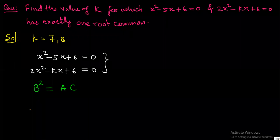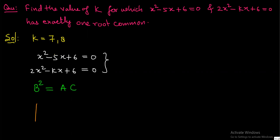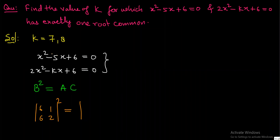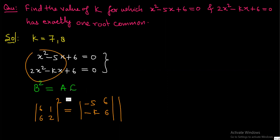So what will b be? The sub-determination will involve minus 5, minus k, 6, 6. And the coefficients will be equal to 1, 2, minus 5, minus k. So this will be the answer.